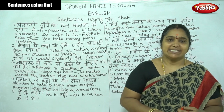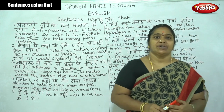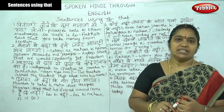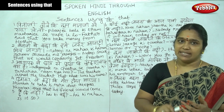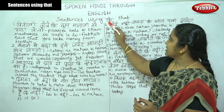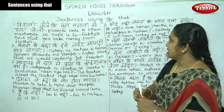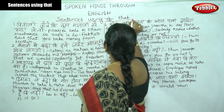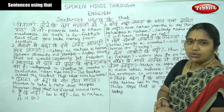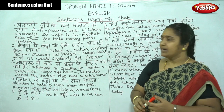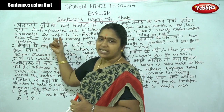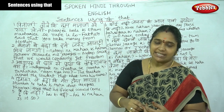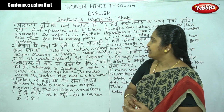Let us look at sentences in direct speech in the statement type. In the statement type, we use the conjunction 'that' in English. In Hindi, that is 'ki' — ki means that. Now we can see how we are changing direct into indirect speech, and how the conjunction is used here.